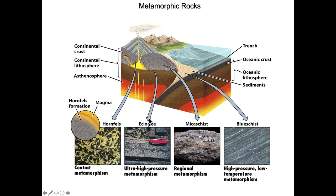Where we have contact metamorphism — cool rock touched by hot rock — we get what's called a hornfels. It's made up of hornblende and feldspar: hornblende is this black stuff, feldspar is this goldish, brownish, greenish material. So this is a contact metamorphism: fairly low pressure, fairly quick cooling because it's near the surface, very distinctive appearance and texture.